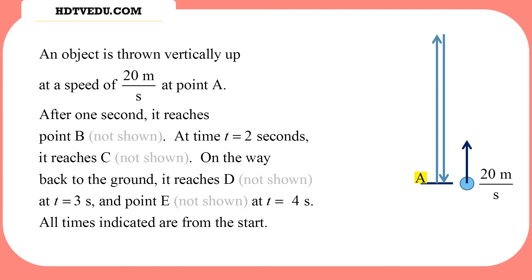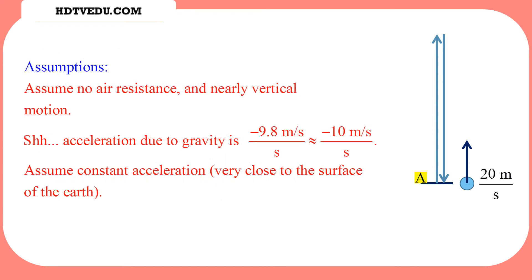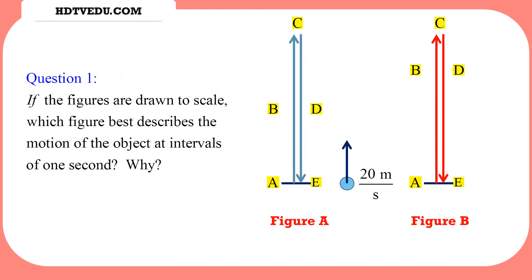So what is our question? Question number one: if figure A and figure B are drawn to scale, which figure best describes the motion of the object at intervals of 1 second, and why?